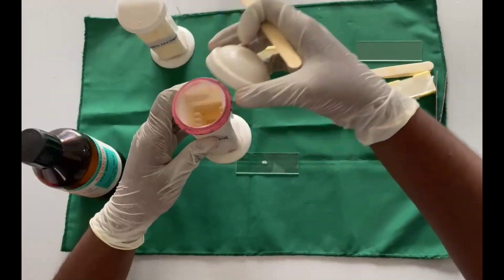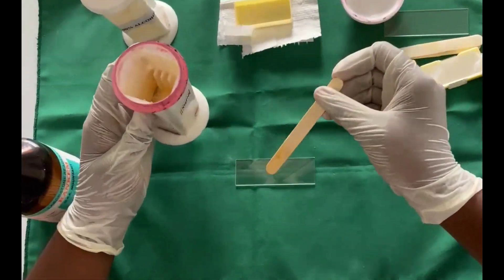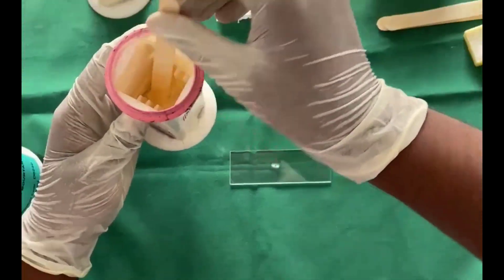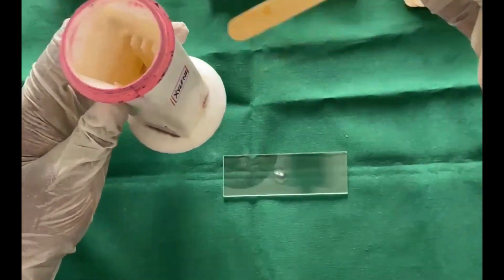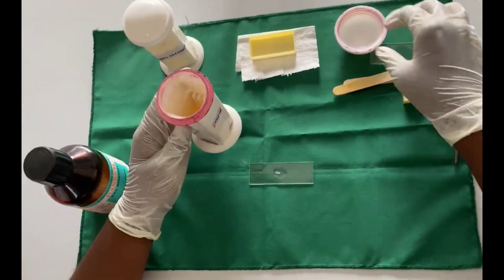Then 2-3 drops of xylene is added onto the specimen as the clearing agent. Clearing agents are used to make the slides easier to read by making the tissues transparent or clear.